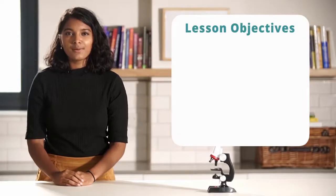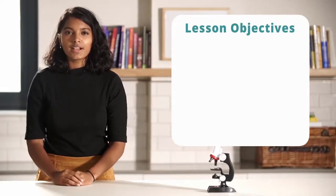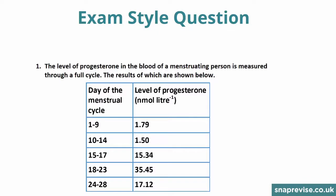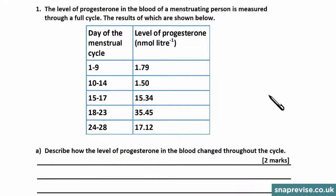In this video we're going to be working through an exam style question to test your knowledge on the content. In question one, the level of progesterone in the blood of a menstruating person is measured through a full cycle. The results are shown in the table, which shows the days of the menstrual cycle and the corresponding level of progesterone. Question 1a asks us to describe how the level of progesterone in the blood changed throughout the cycle.